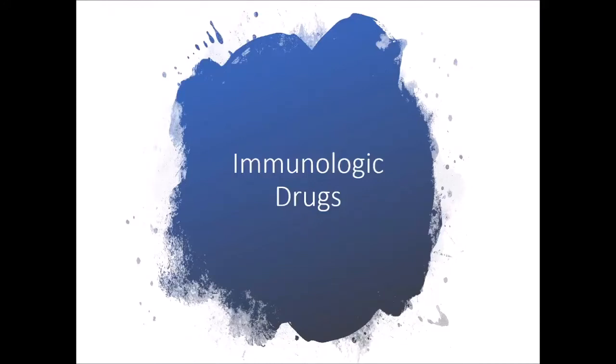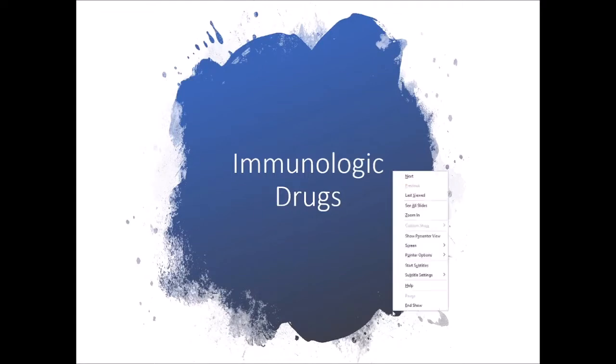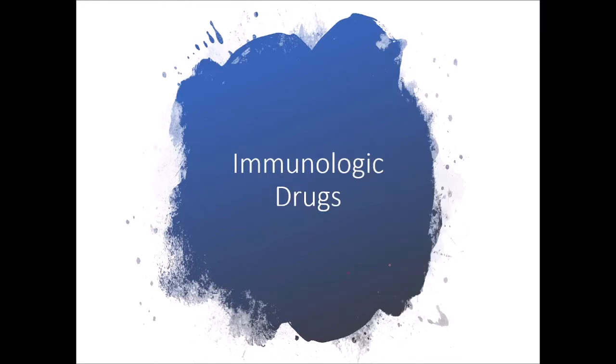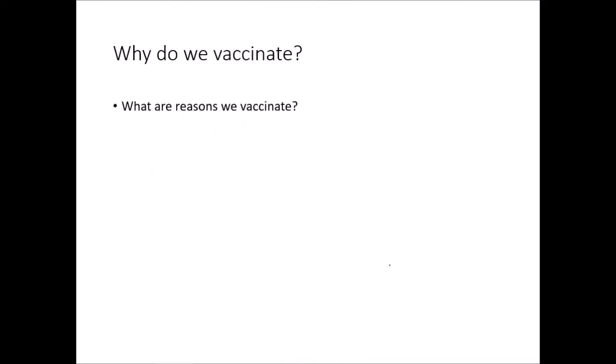I'm talking about chapter 17 in your Applied Pharmacology book — it's over immunologic drugs. What do we use for the immune system? Why do we vaccinate? We vaccinate to protect animals against diseases that we can help their bodies to remember. We also do it to protect animals around them and ourselves as humans for zoonotic diseases.